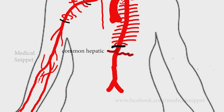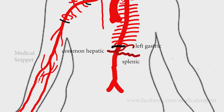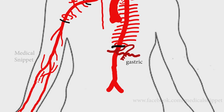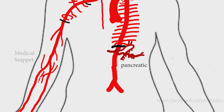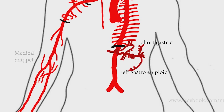The celiac trunk divides into the common hepatic, splenic, and left gastric arteries. The left gastric artery gives gastric and esophageal branches. The splenic artery gives pancreatic, splenic, short gastric, and left gastroepiploic arteries.